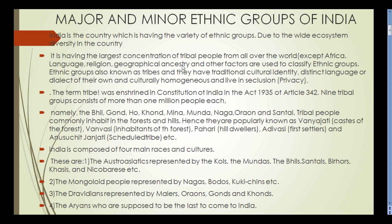Each tribal group has more than one million people. The nine major tribal groups are: Bhil, Gond, Ho, Kond, Mina, Munda, Naga, Oraon, and Santal. These are the different tribal communities, each having their own specific identity.